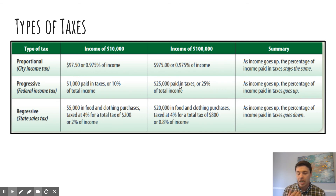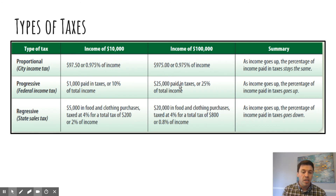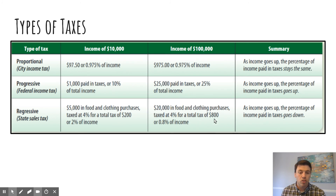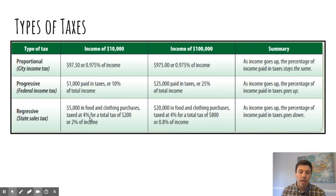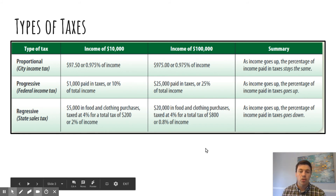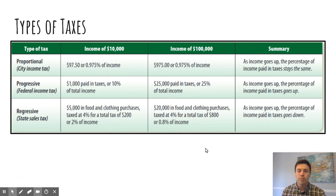Finally, we have the regressive tax. We use this for our state sales tax, where it's just a flat percentage rate with nothing based on income. What ends up happening is since it's a flat rate based on what you're buying, as your income goes up you actually pay a lower percentage overall. For example, the person making $100,000 spends $20,000 on food and clothing, taxed at 4%, which comes out to $800 — that's 0.8% of their income. Whereas the person making $10,000 spends $5,000 at 4%, and they end up paying a higher percentage of their overall income than the person making $100,000. That is a regressive tax system — you pay less as you make more.